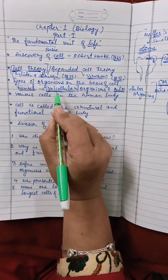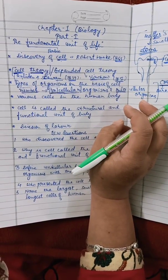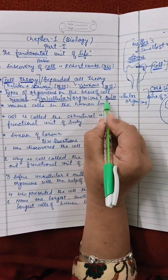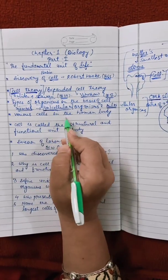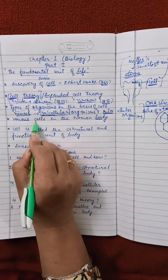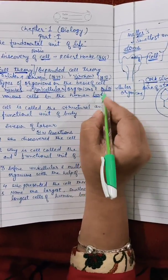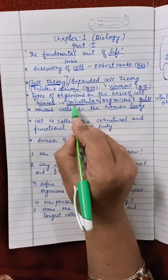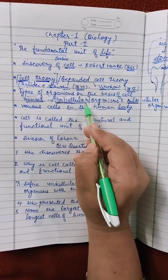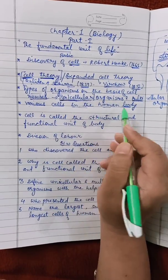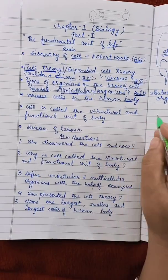Examples of unicellular organisms are amoeba, paramecium, and Chlamydomonas. For multicellular organisms, examples include human beings and plants. Now let's talk about the various cells in the human body. Different kinds of cells are found in the human body. In a unicellular organism, only a single cell performs each and every function, whereas in multicellular organisms various cells perform different kinds of functions.